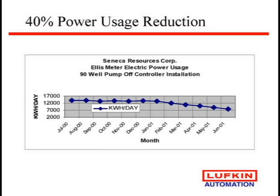Here's an example from the Enron days. In a project in California, they put controllers on in January, and the guy called me and said it was really neat — they reduced their power, but didn't save any money. I asked what he meant, and he said their rate went up so high that even at a 40% reduction in power, their bill stayed the same. So if they hadn't put those controllers on, their bill would have been 40% higher. It just shows that your run times can go down significantly by matching that reservoir with a controller.